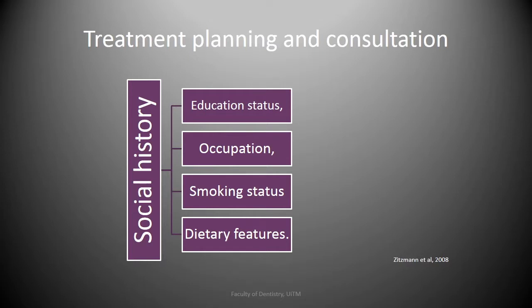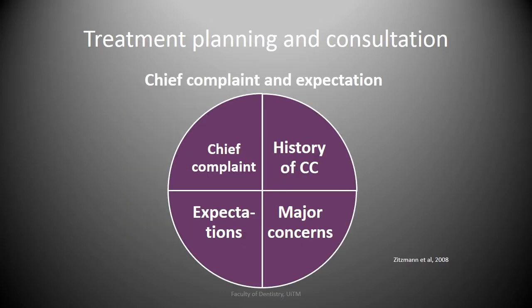A thorough social history should also be obtained, including education status, occupation, smoking status, and dietary features. It is essential to obtain a detailed chief complaint and history of that complaint in the first consultation. Expectations and concerns should also be obtained — for example, replacing a missing tooth in the anterior region might be related to aesthetic and psychological concerns, while in the posterior region it might be related to concerns regarding reduced function.